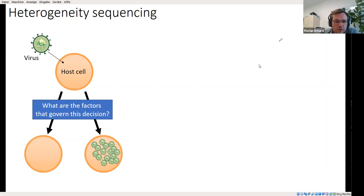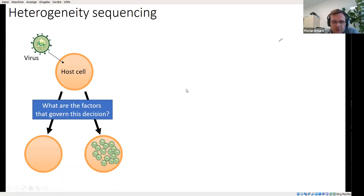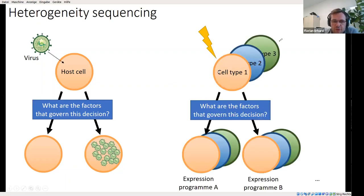To sum this up: to investigate virus infection in single cells with this level of detail, metabolic RNA labeling is absolutely required. It is not only important for resolving short-term regulatory changes, but it also enables us to relate the state of each individual cell at the time of infection to its infection outcome. An absolutely exciting opportunity is to use heterogeneity sequencing to generate hypotheses about host factors determining infection outcome. This is not restricted to infection systems — you can investigate any kind of perturbation or dynamic process, and it will be straightforward to apply to complex mixtures of cell types.